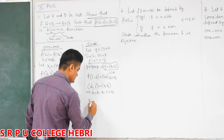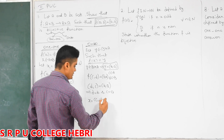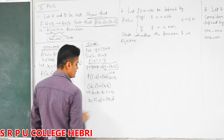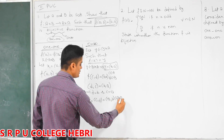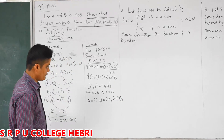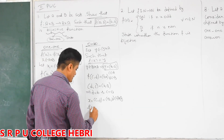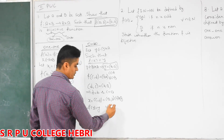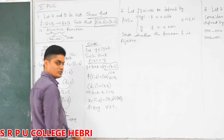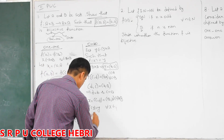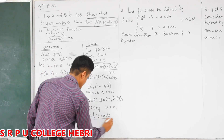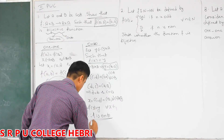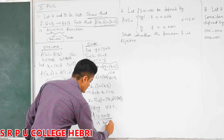We have to prove that x, which is (c, d), belongs to A cross B. Since c equals a and a belongs to A, and d equals b and b belongs to B, obviously (c, d) belongs to A cross B. So we proved that f of x is equal to y for all x belonging to the domain, y belonging to the co-domain. So, we proved f is onto. Here we proved one-one, here we proved onto. So the function is bijective. Therefore, f is bijective.